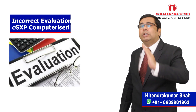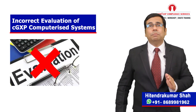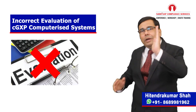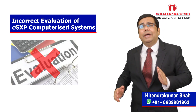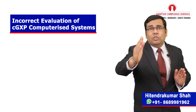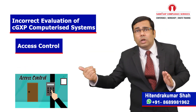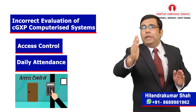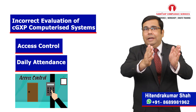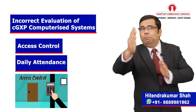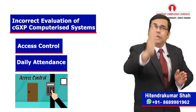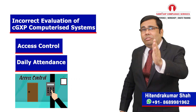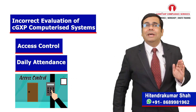Error 1: Incorrect evaluation of GxP computerized systems. In many organizations, some systems are not considered under the GxP category — for example, systems used for access control, systems used for daily attendance, etc. These systems support ensuring that data generated is attributable to the employee. Hence, evaluation of the GxP criticality of computerized systems should be based on risk assessment.